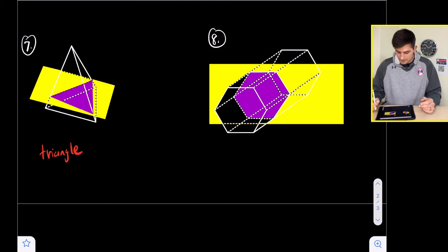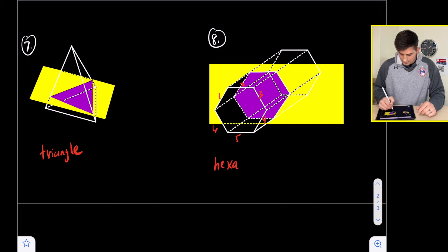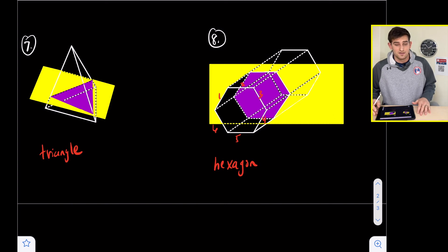For number eight, we have one, two, three, four, five, six sides—this is a hexagonal prism. We are slicing it in half horizontally, so it creates a hexagon for its cross section. That's how you identify cross sections of solids.